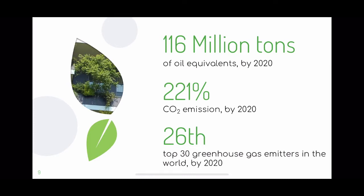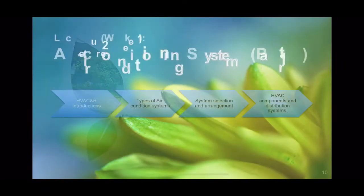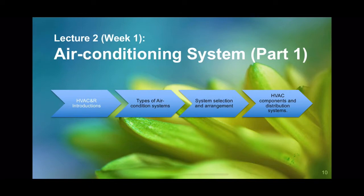We also have COVID-19 happening, which might reduce energy demand of air conditioning in commercial buildings, but energy demand for residential buildings will increase. There are around 221 — double the emissions by 2020 — and also 26 to 30 greenhouse gas emitters in the world by 2020 from air conditioning systems.